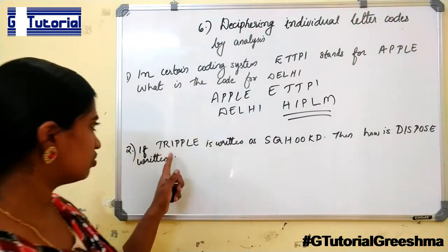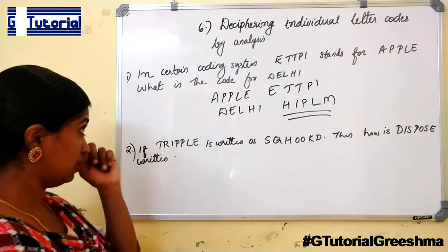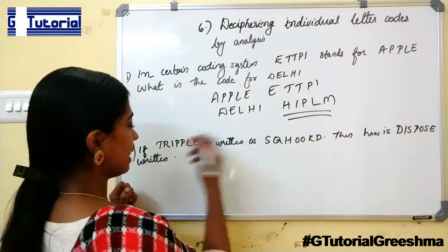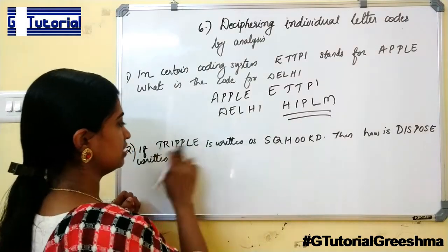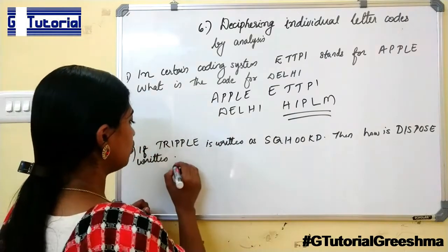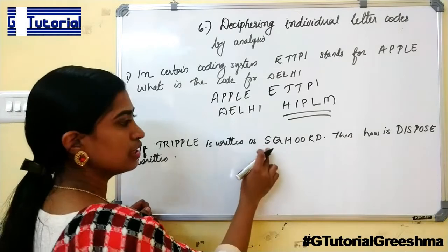Next one. Triple is written as SQHOKQ. Then how is dispose written? If triple, it is minus 1. T becomes S, R becomes Q. So each letter minus 1 gives its code.